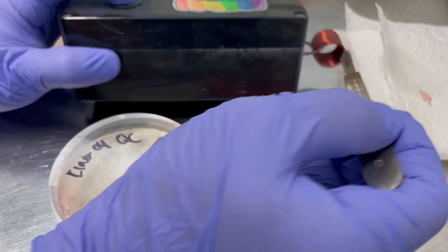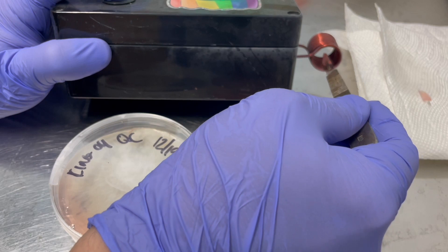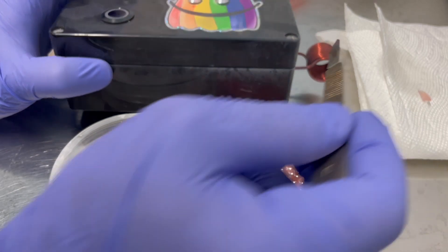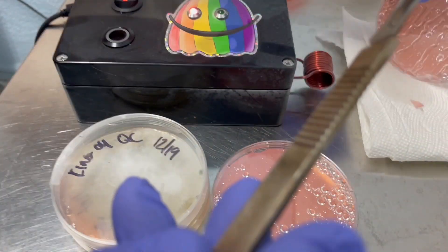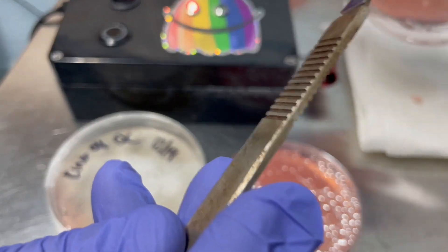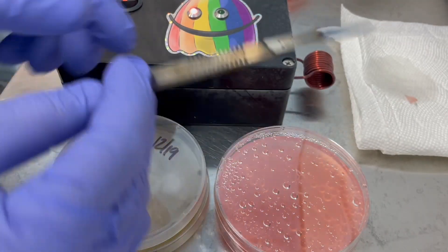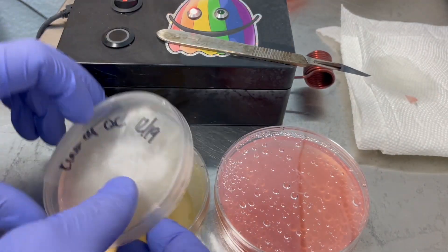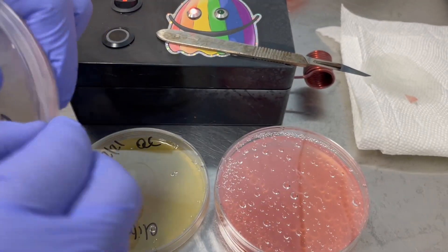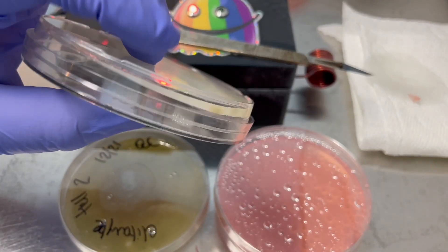Now I'm going to sterilize this again because I don't want to transfer any lion's mane mycelium onto that next plate. Once again, I got some condensation, so I'll just go ahead and tap that out. And this is my king oyster with cracked petri dish, which I shouldn't have used.